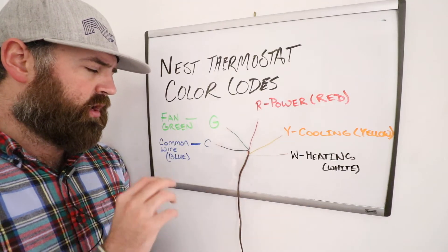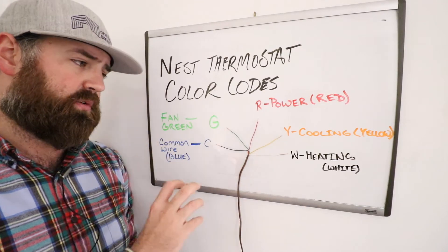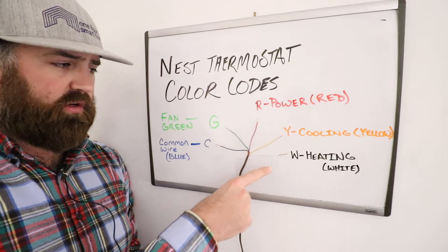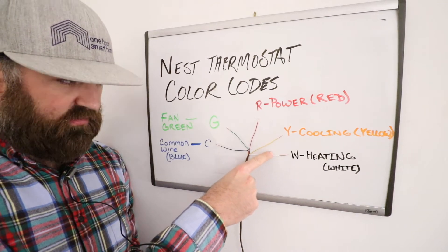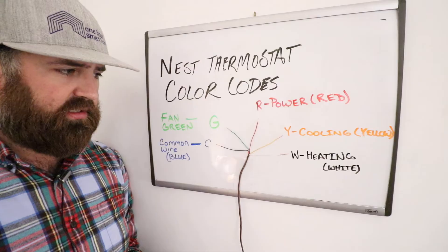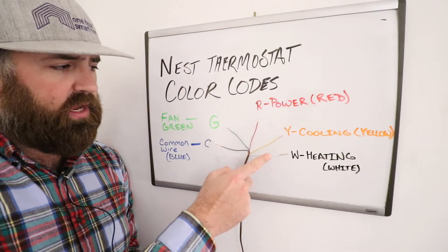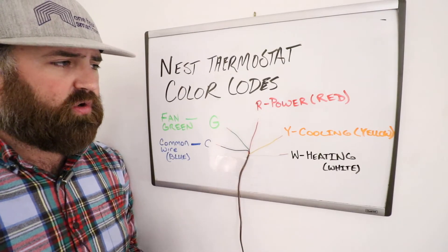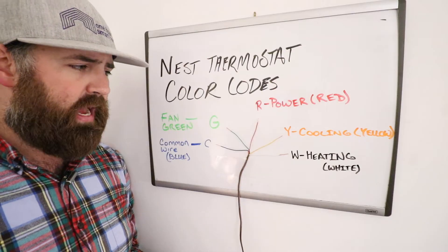It is not required. Once again, the G-wire is not also required. But if you want heating and cooling, you definitely have to have the W-wire, and the Y-wire is cooling. So heat is W, or white. Y is yellow for cooling for Nest, and R is power.